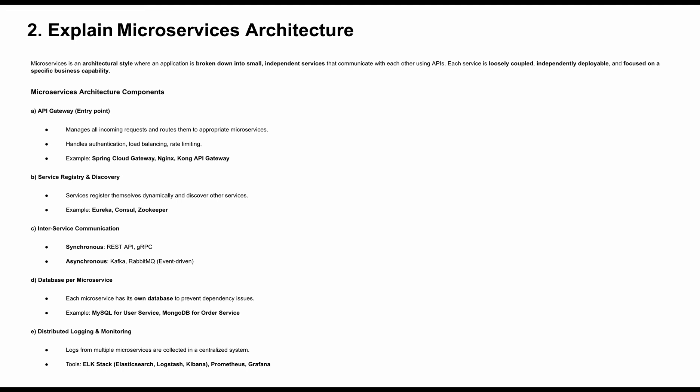For microservice architecture components, you can explain what is involved while developing microservices. First, we need an API gateway — a single entry point to manage all incoming requests, route them to the appropriate microservices, handle authentication, load balancing, and rate limiting. Examples include Spring Cloud Gateway, Nginx, or Kong API Gateway. Second is service registry and discovery, where services register dynamically and discover other services — examples include Eureka, Consul, or ZooKeeper.